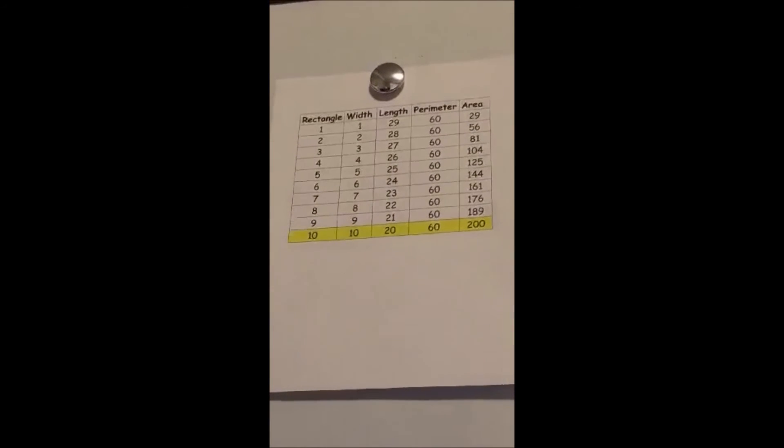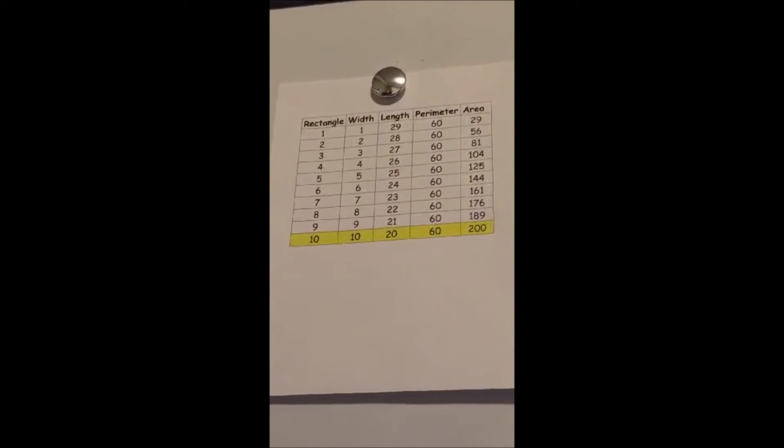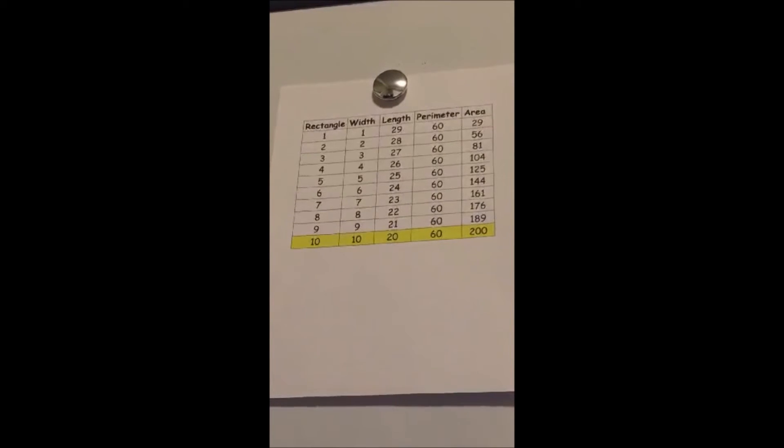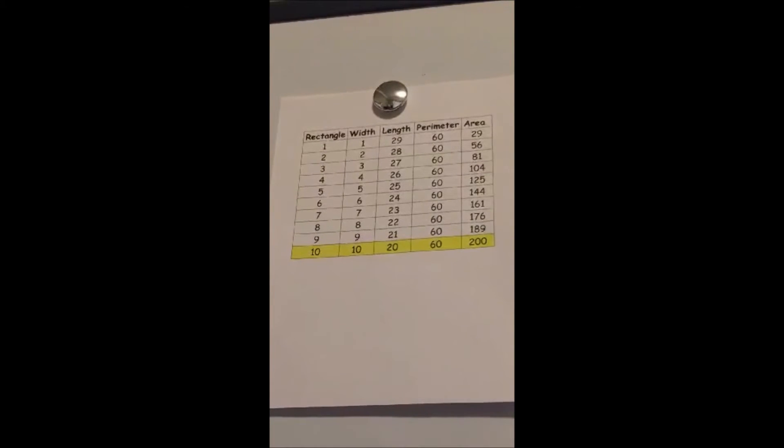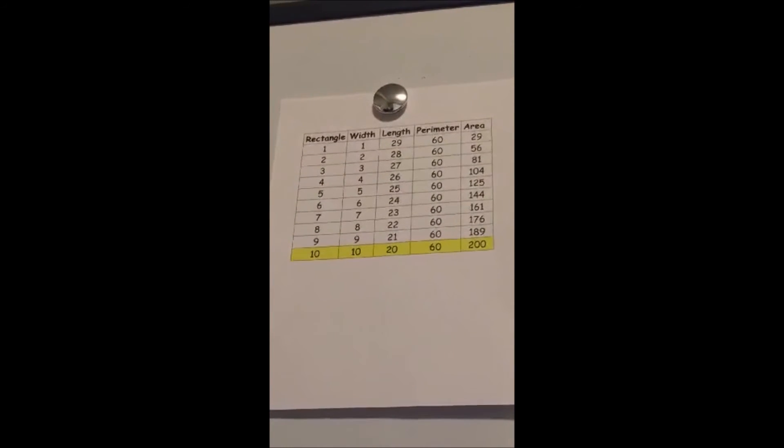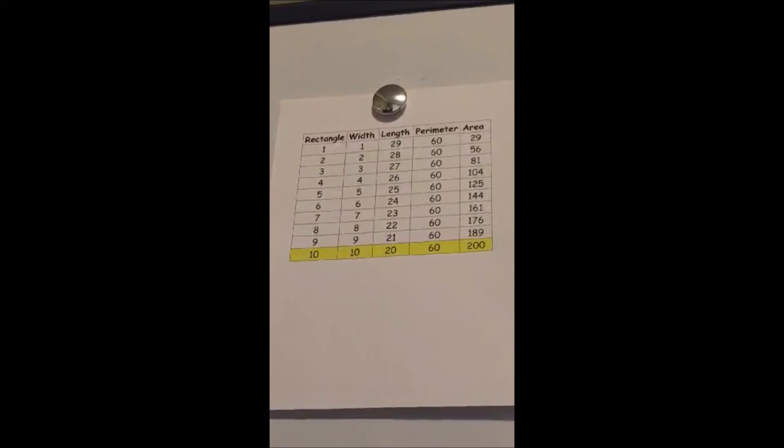For a rectangle with maximum area made of 60 toothpicks, my prediction would be the rectangle with a width of 10 and the length of 20. Again, the maximum area is based on the largest width and length of the rectangle. However, it is not a square shape.